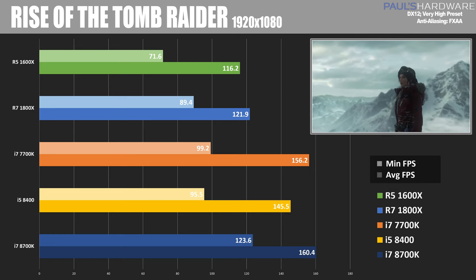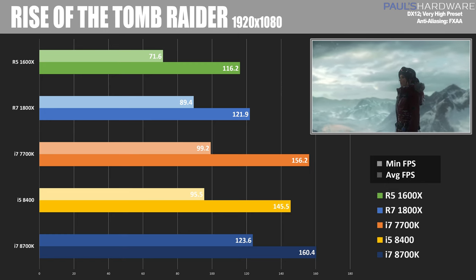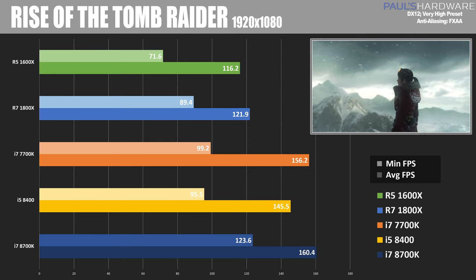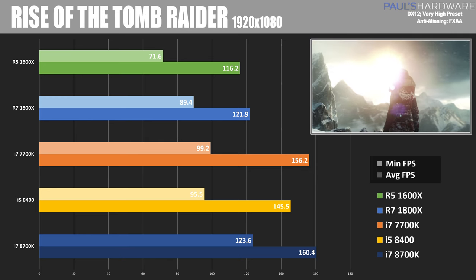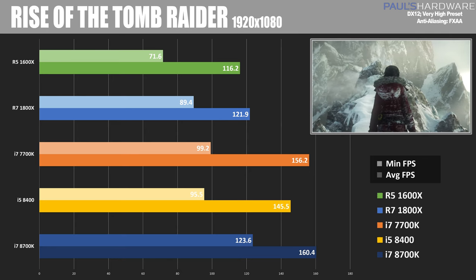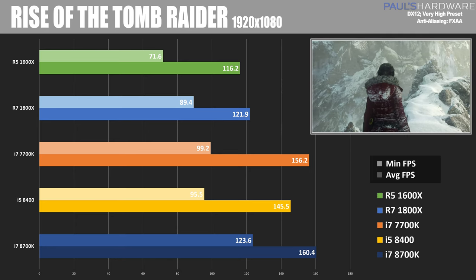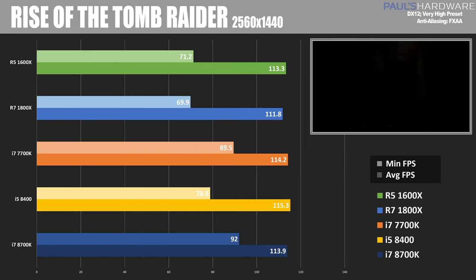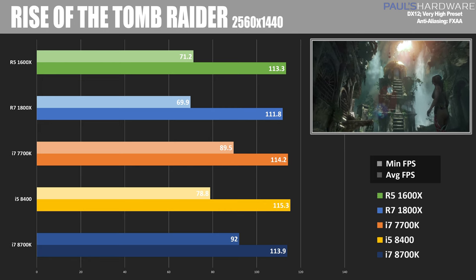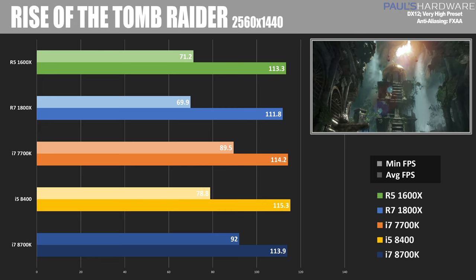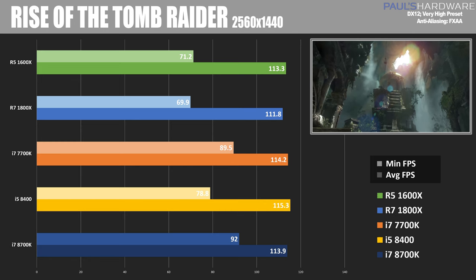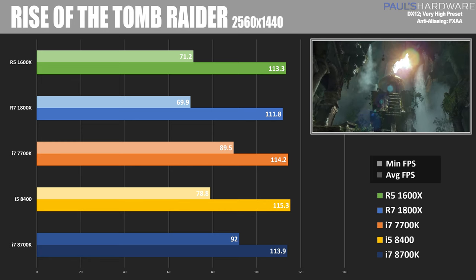Moving over to actual games, starting with Rise of the Tomb Raider in DirectX 12 mode at 1080p. We saw a pretty decent skew in performance, with the 8700K taking a significant lead at 160 frames per second, the 8400 coming in at 145, and the 1800X and 1600X coming in much closer to about 120. At 1440p the advantage narrows, with all platforms coming in around 110 to 115 frames per second with no clear leader — although the 8700K does seem to keep minimum frame rates a little higher, reducing those annoying low frame rate moments.